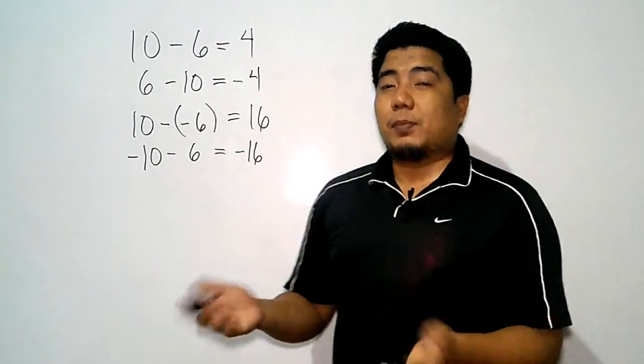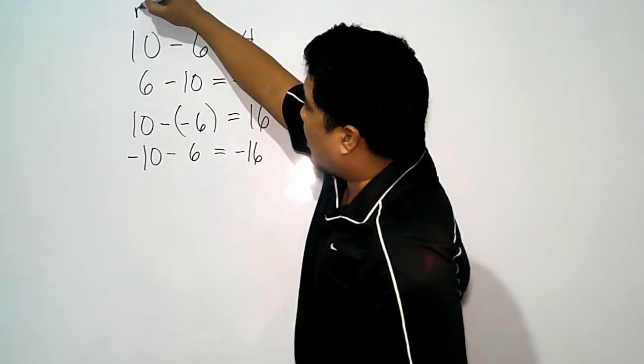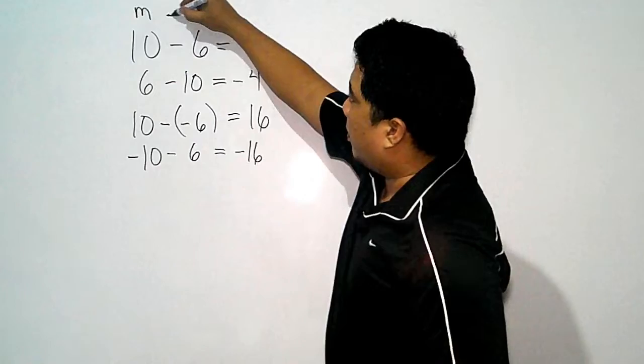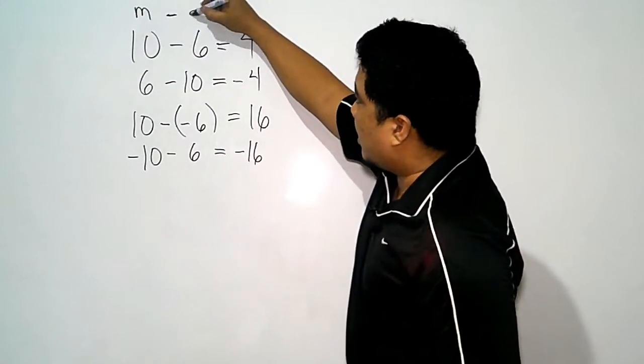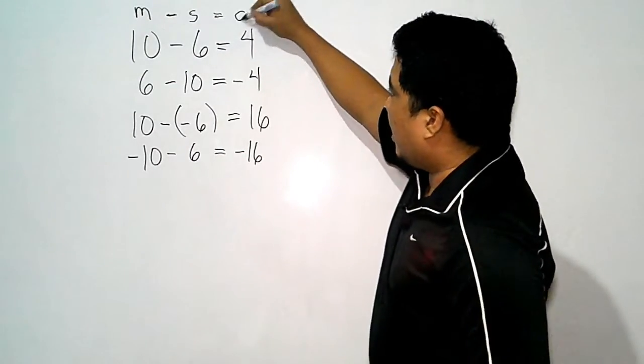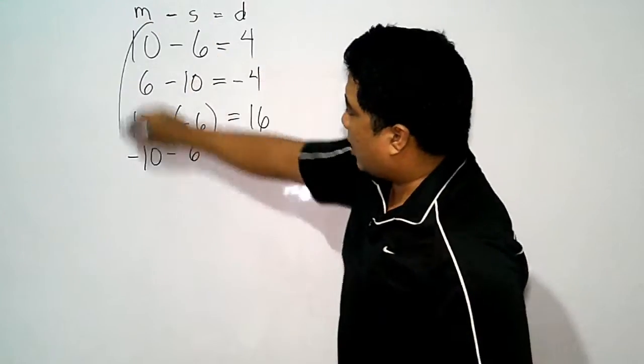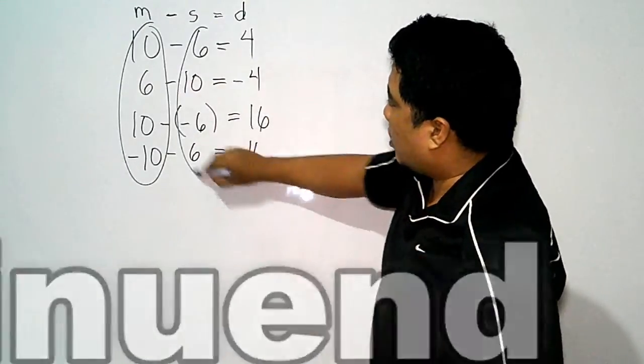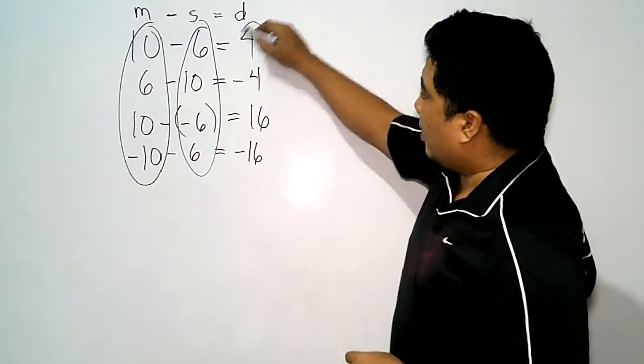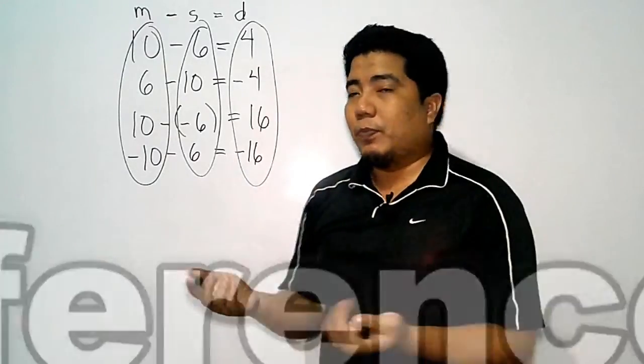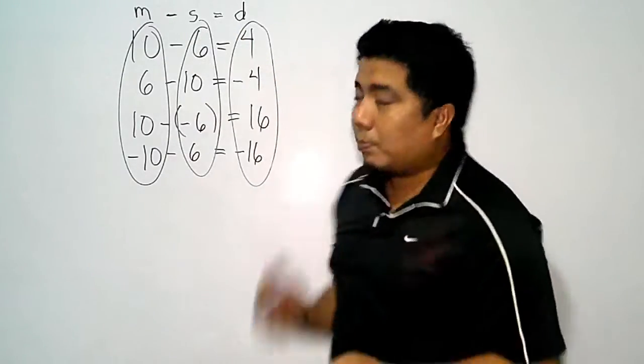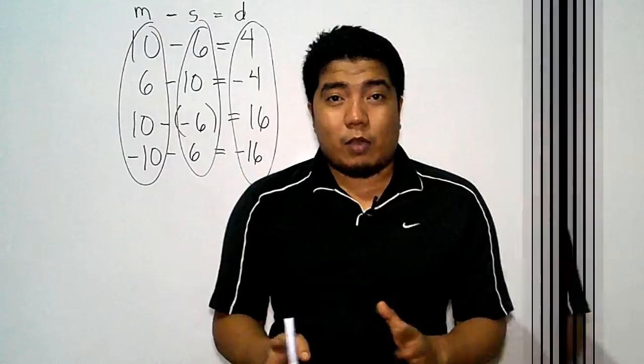Now, let us consider first the parts of subtraction. This is known as the minuend. This is the operation minus. This is the subtrahend, and this is the difference. So what you see here is the minuend, what you see here is the subtrahend, and this is the difference, the answer. Well, this is the operation minus.